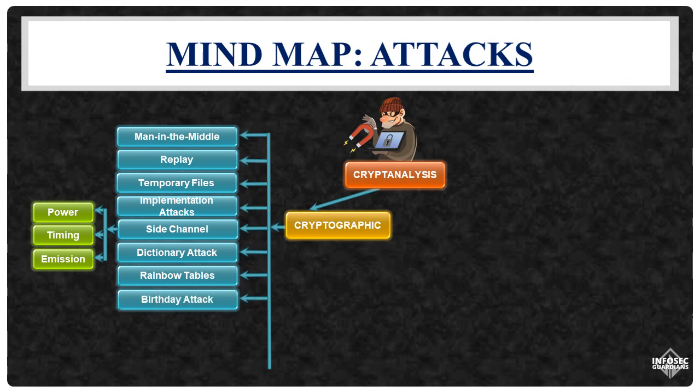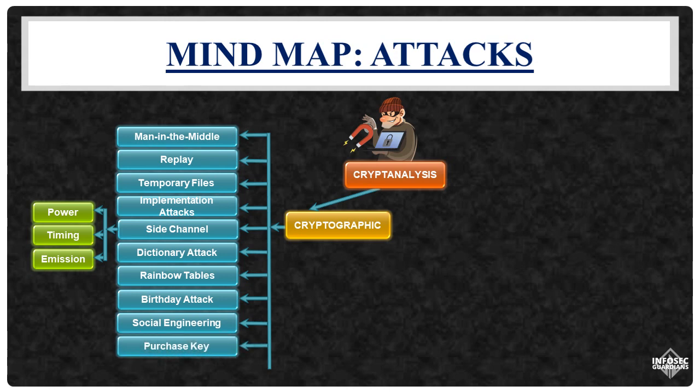Birthday attacks exploit probability theory's birthday paradox to find collisions in hashing algorithms. Lastly, the most effective way to compromise a cryptosystem often involves targeting the system's weakest link — people. This may include bribing individuals (the purchase key attack), or employing force or intimidation, known as rubber hose cryptanalysis.